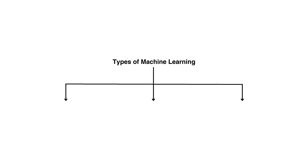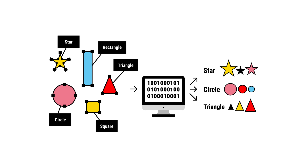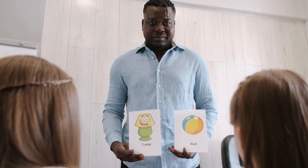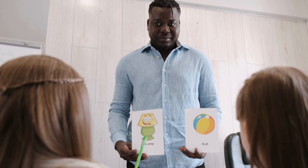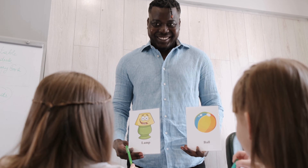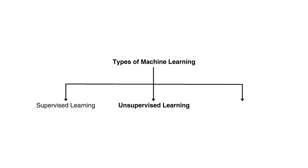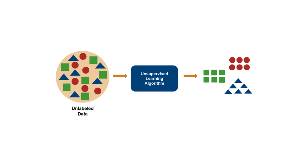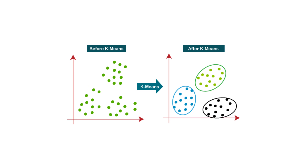There are three main types of machine learning. Supervised learning involves training a model on labeled data where the correct answers are already known — it's like teaching a student with flashcards, showing the input and the correct output. Unsupervised learning requires less human intervention: the model is given data without labels and tries to uncover hidden patterns or groupings on its own, with clustering being a common technique.